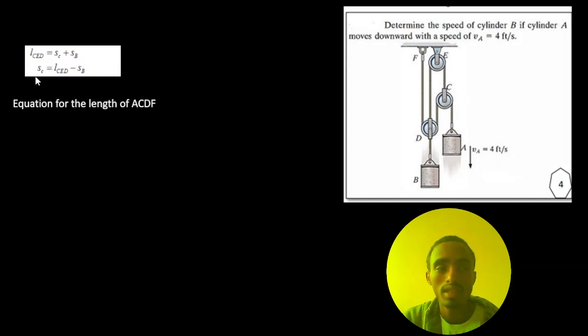Then for the path ACDF, as you can see this shape, we will get the distance in terms of SDC as SA minus SD plus SD minus SD plus SD plus SD, or in general SA plus 2SD minus 2SD.